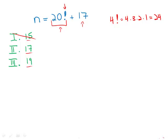Similarly, 19 would go evenly into 20 factorial, but 19 would not go evenly into 17, so 19 does not work.